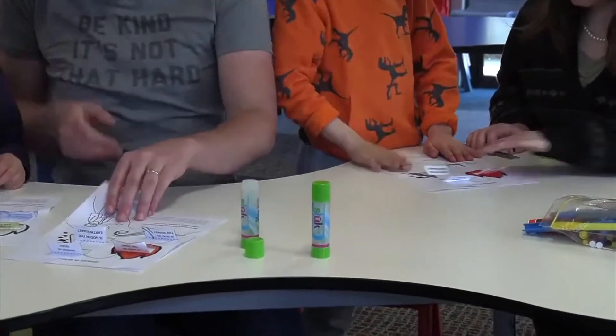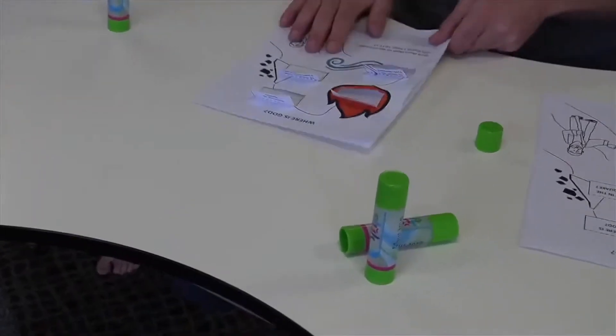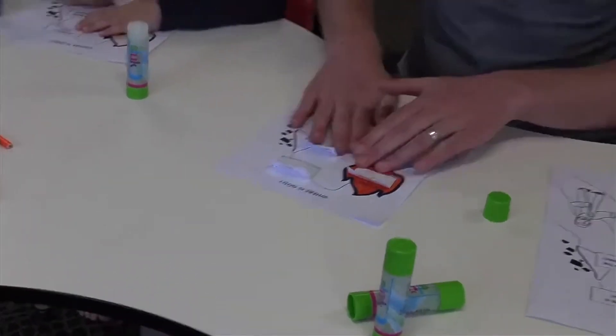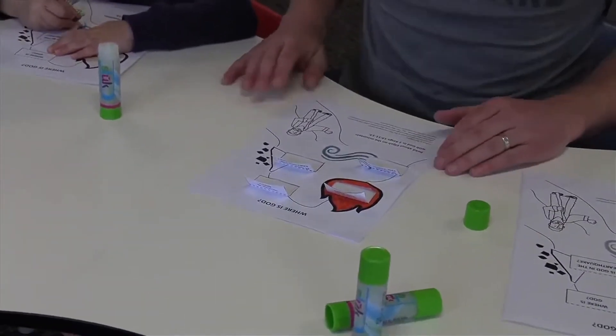So then we can write inside on the flaps and talk about what Elijah talked about with God and where God was. In our Bible story, can you remember?